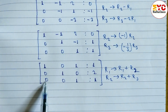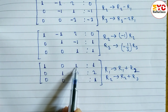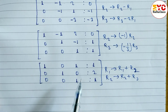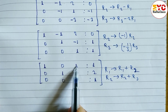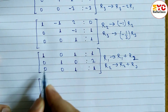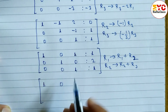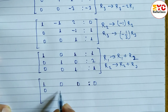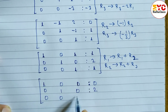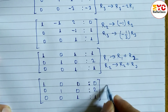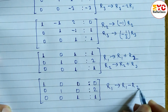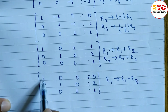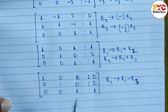Now we need to convert the entry in row 1, column 3 to 0. We apply R1 → R1 - R3. Subtracting: 1-0=1, 0-0=0, 1-1=0, and 1-1=0. So row 1 becomes 1, 0, 0, 0. Rows 2 and 3 remain 0, 1, 0, 2 and 0, 0, 1, 1. We have successfully converted the augmented matrix to identity matrix form.